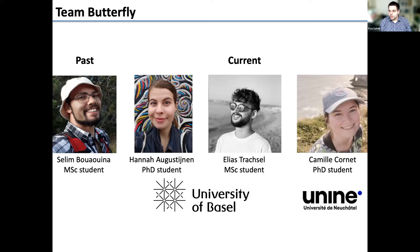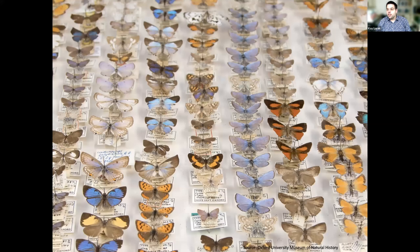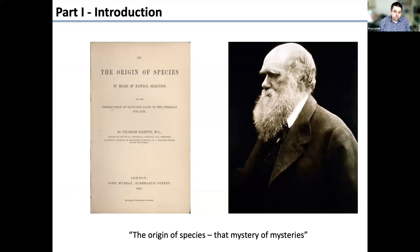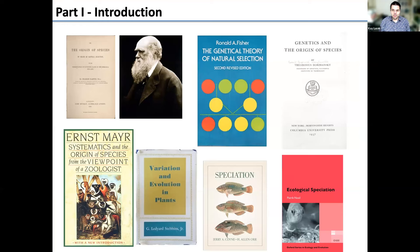First things first: what brought me here is my interest in trying to understand how species evolve, how biodiversity evolves and is maintained. It's a long-standing debate. Darwin outlined that the origin of species is the mystery of mysteries, and despite many frameworks developed since — genetic, ecological, plant, animal — we still don't know much about how speciation actually works, especially at an advanced stage.